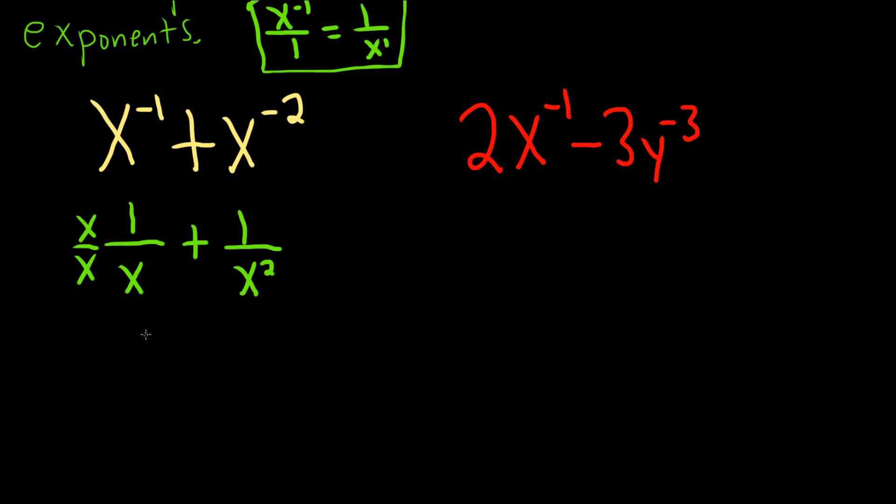If we do that, we get x times 1, which is x, and then x times x, which is x squared. And then plus 1 over x squared.